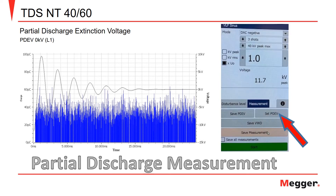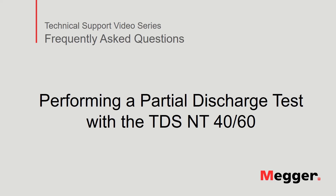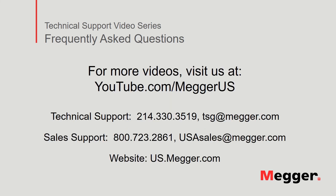Next, ensure that overall PD measurements are saved. This concludes our discussion on performing a partial discharge test with the TDS-NT. Visit the Megger YouTube channel for more videos, including technical webinars, product overviews, and other how-to presentations similar to this one. Contact us for questions or more information about this topic, or for any support you may need for your electrical testing.